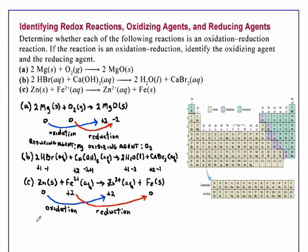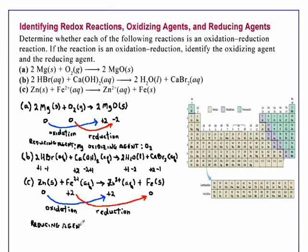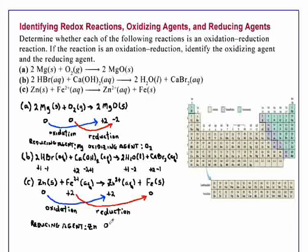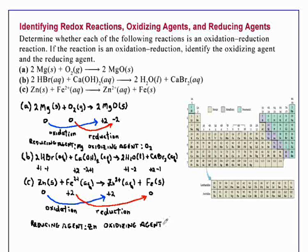The oxidation reaction is zinc going to Zn²⁺, and the reduction reaction is Fe²⁺ going to Fe. The species undergoing oxidation is the reducing agent, so the reducing agent is zinc. The species undergoing reduction is the oxidizing agent, so the oxidizing agent is Fe²⁺. This is a redox reaction.